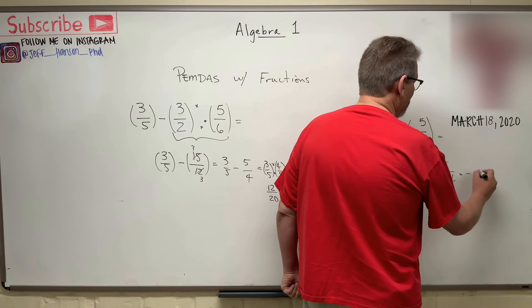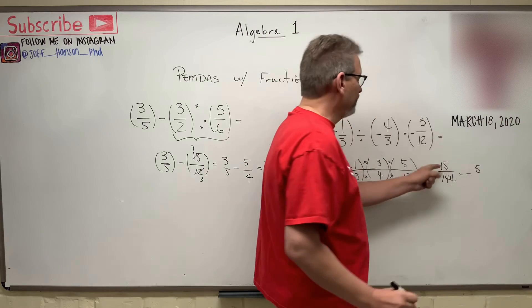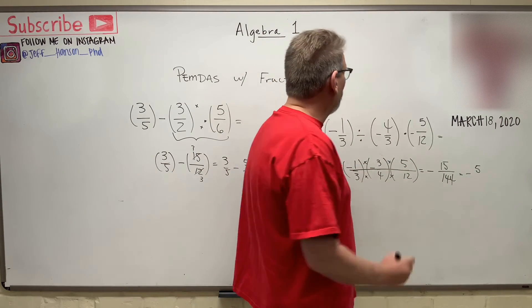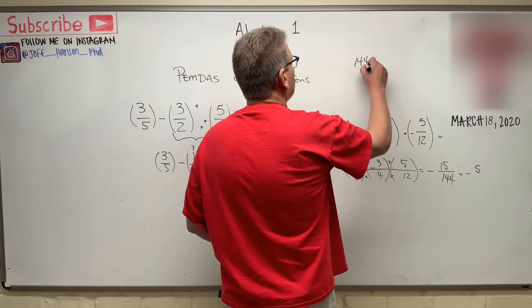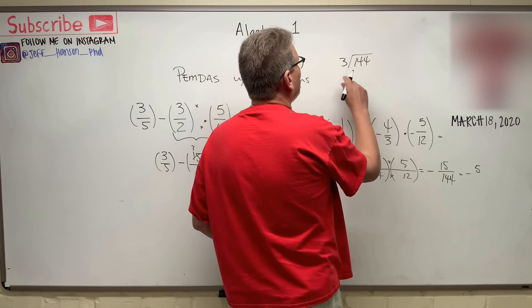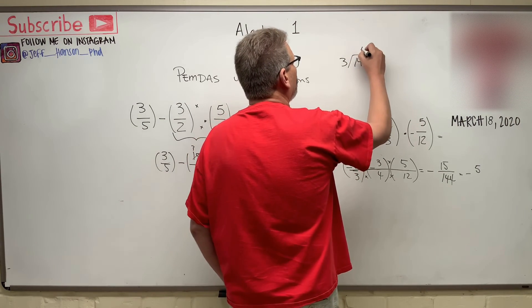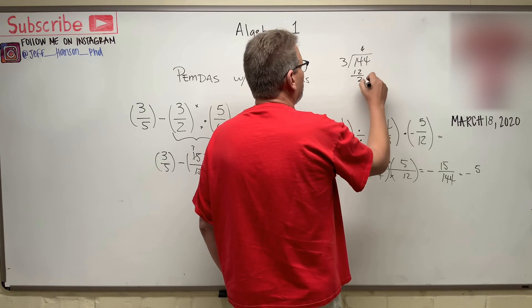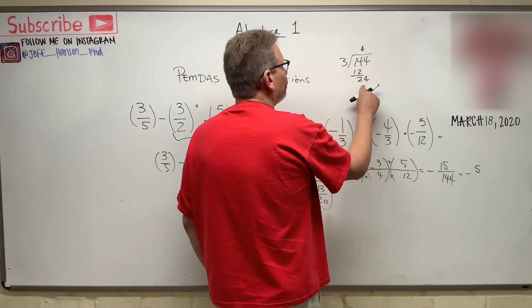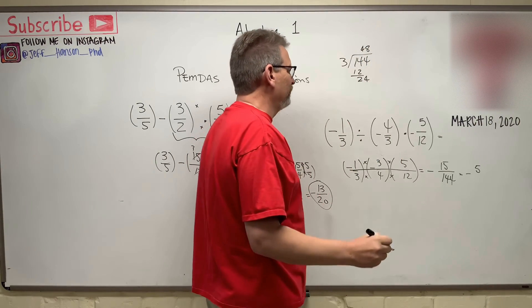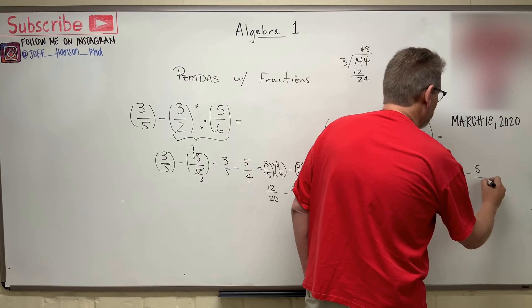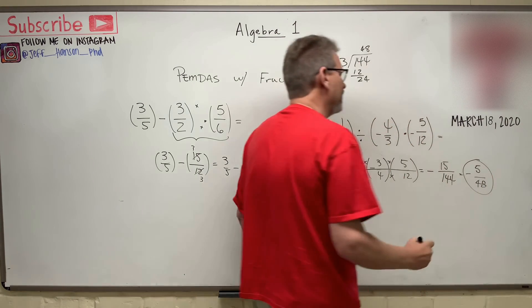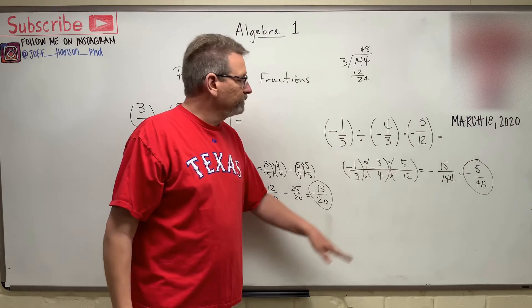The top will become a 5. 15 divided by 3 is 5. And what is 144 divided by 3? 3 will go into 14 four times, that's 12, leaving a remainder of 2. Bring down the 4. 3 goes into 24 eight times. So that turns into -5/48. That won't reduce any more.